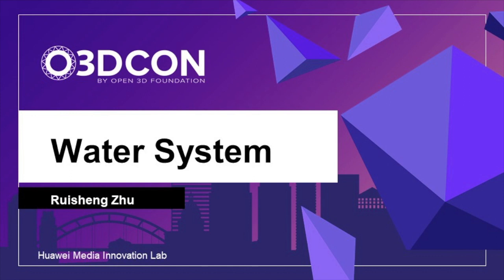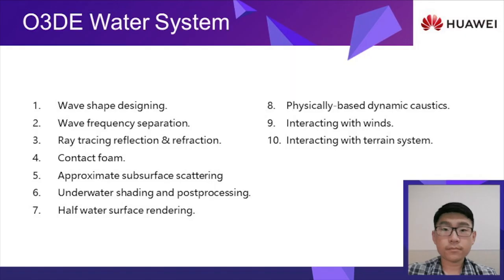We know that water systems are always an important part of graphics engines. However, in O3DE, it is temporarily missing. So what I've been trying to do is to build and improve the water system in O3DE. I've been working on this topic for a couple of months. These are the 10 features which I think may improve the appearance of the water, and I will follow this outline and go into detail one by one.